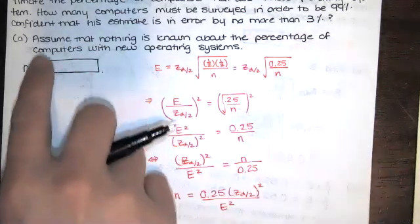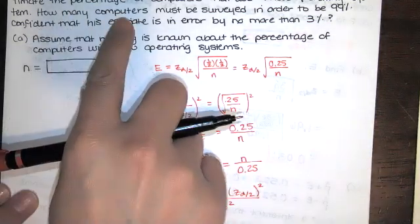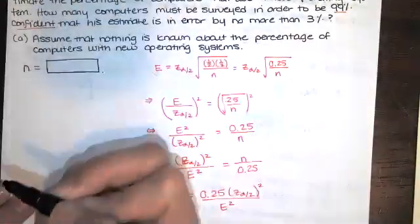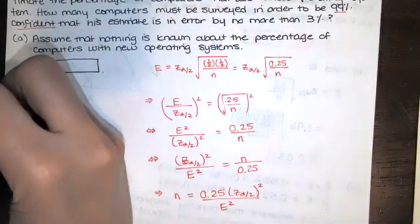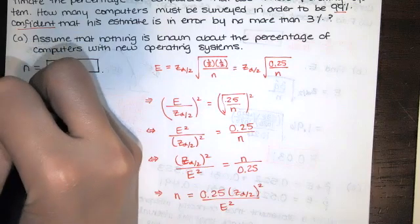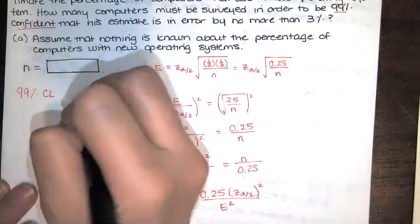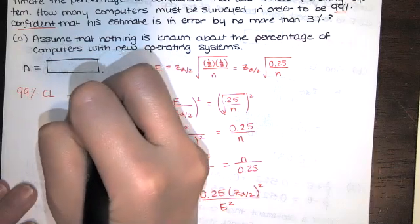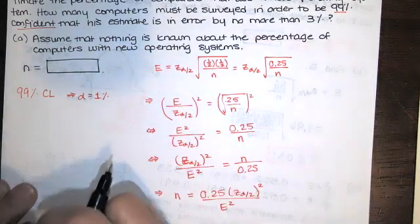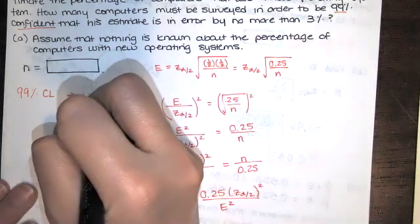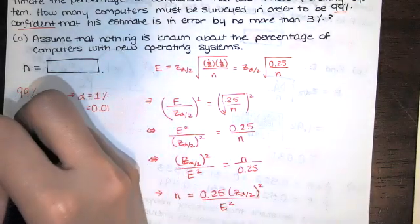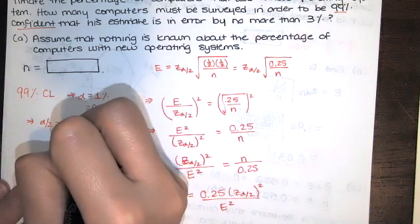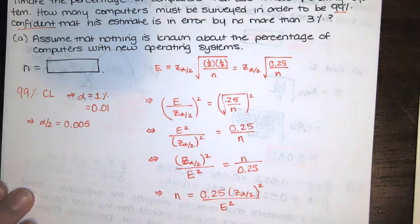In the problem statement, it says, how many computers must be surveyed? So they're asking for n in order to be 99% confident. So that 99% confident, that's the confidence level, that tells us that alpha is equal to 1%. So it's the complement of that 99% or 0.01. And alpha over 2 is half of that, so half of 1%, which is 0.005.